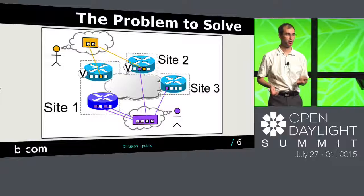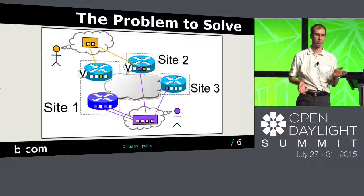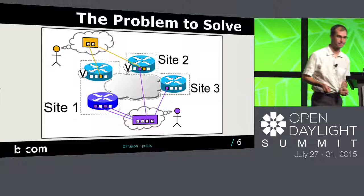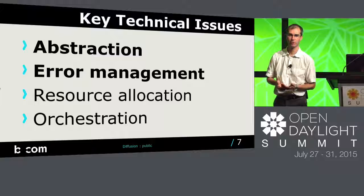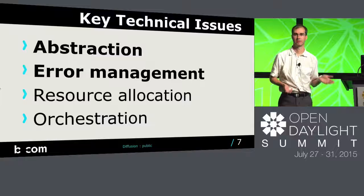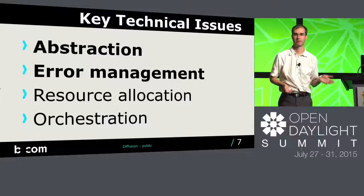We can also have a second user — user purple — which creates a logical switch spanning site one, site two, and site three. The important thing is that its virtual network is completely isolated from the other users. In order to solve this problem, we faced several technical issues. I will present two of them: abstraction and error management. We also solved other issues such as resource allocation and orchestration.